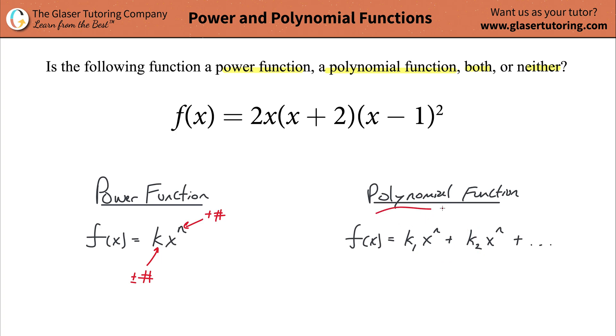You can think of then a polynomial function as like a series of added power functions. Interestingly enough then, the polynomial doesn't necessarily need to be all powers. You could have a constant out there as well. So you don't need it, but it could be there.